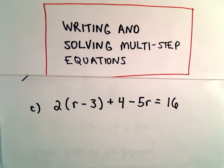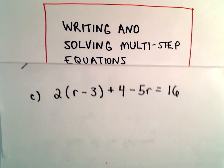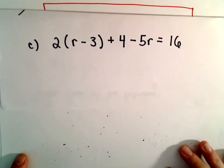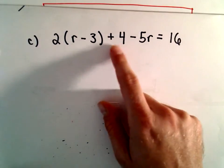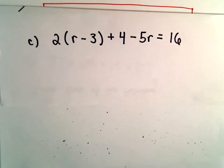Okay, so here we'll have one more example of solving an equation that will take a few steps to simplify. So we have 2 times the quantity r minus 3 plus 4 minus 5r equals 16.